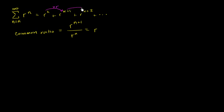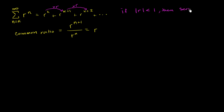This is all review. If it's not review, I encourage you to watch the videos on geometric series. What's interesting is we've proven to ourselves that if the absolute value of the common ratio is less than one, then the series converges. If the absolute value of r is greater than or equal to one, then the series diverges.